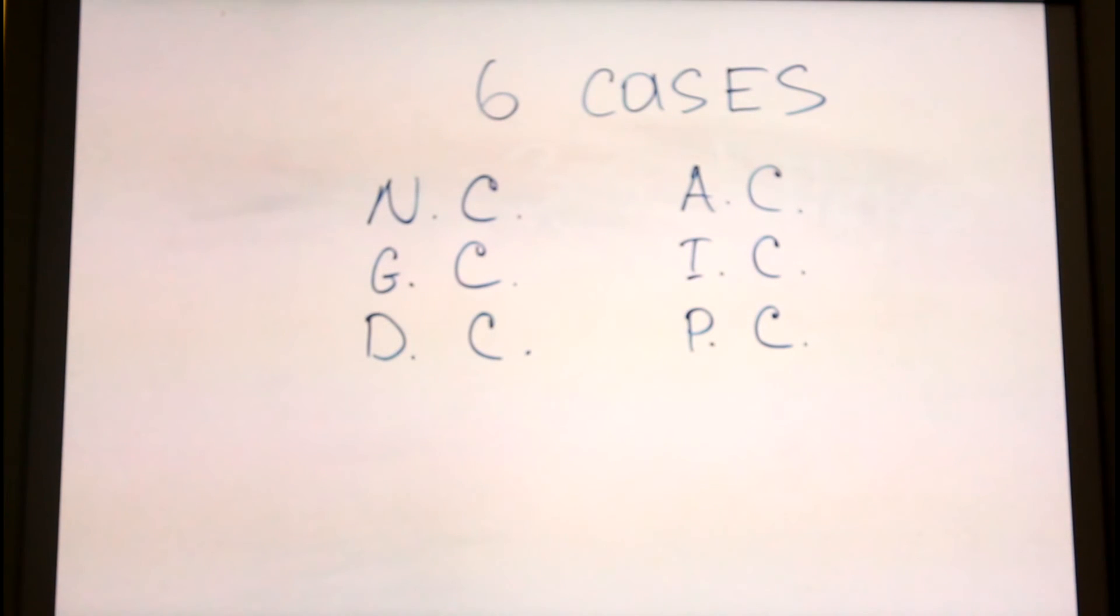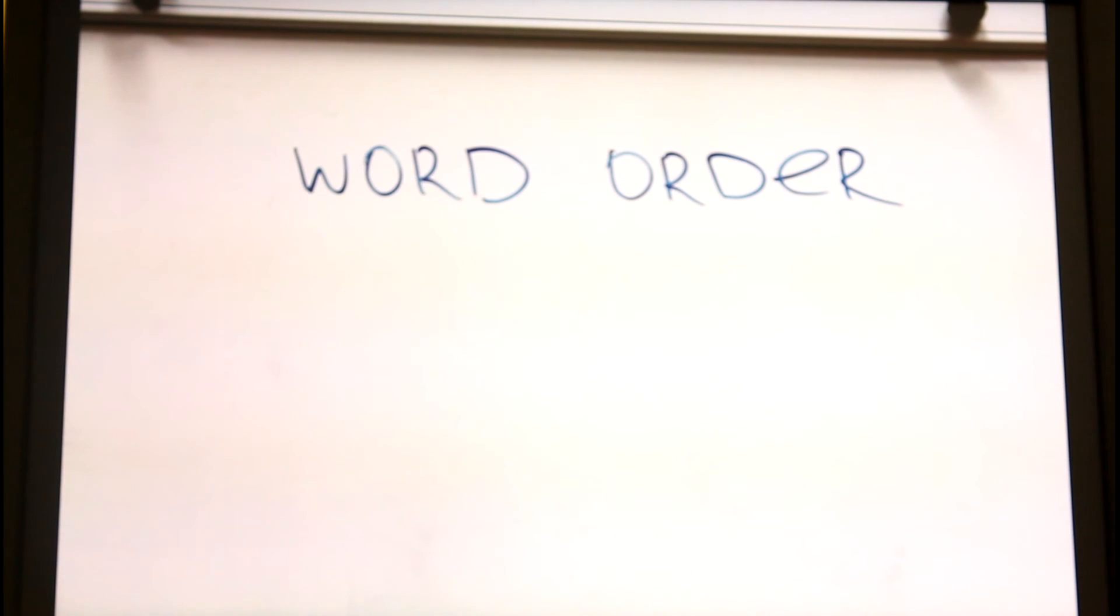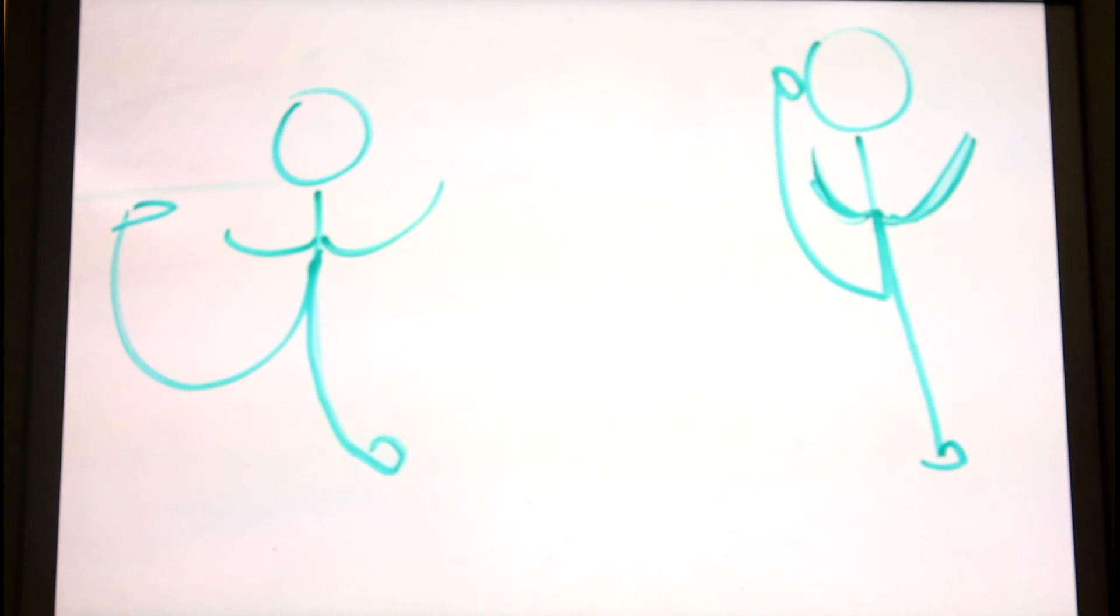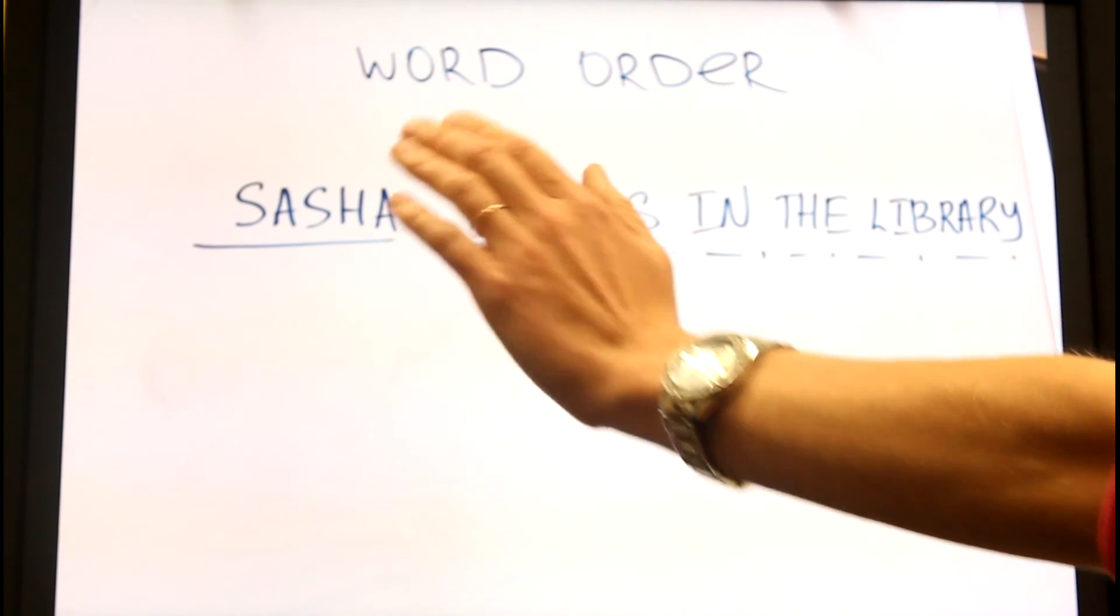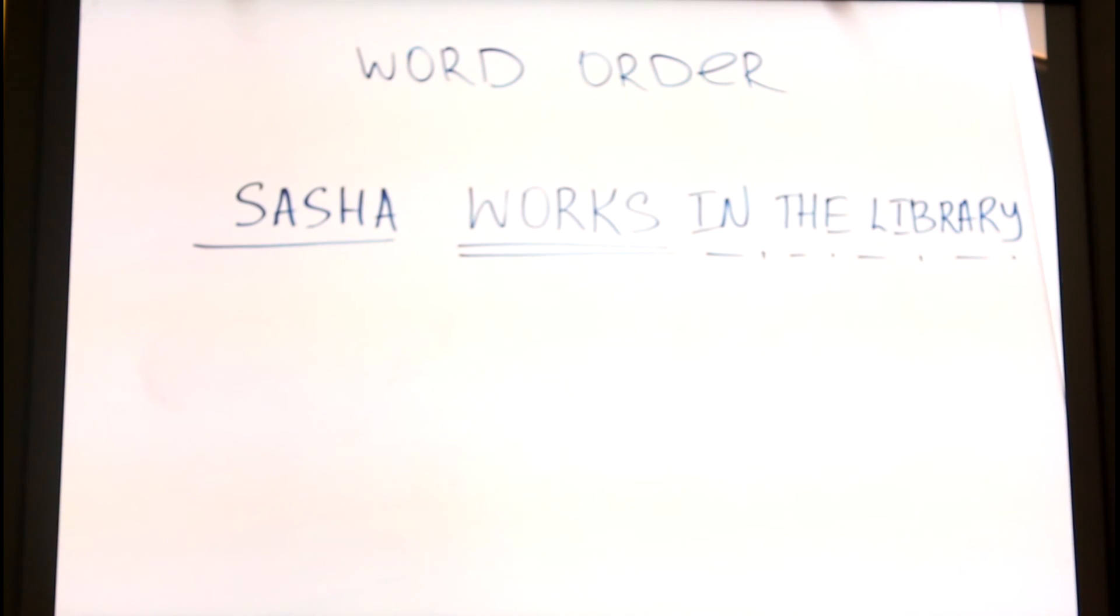Russians also distinguish between you-formal and you-informal. Word order is very flexible, as Russian is highly inflected. Thus, you can say Sasha rabotayet v biblioteke.